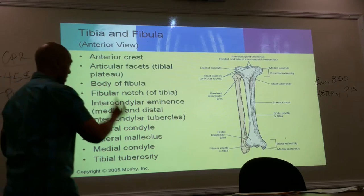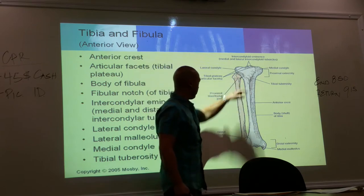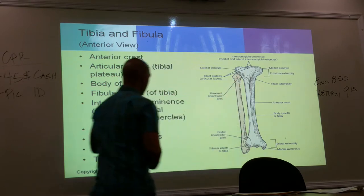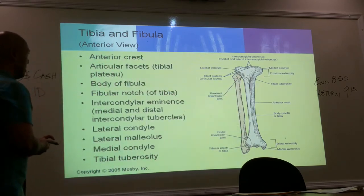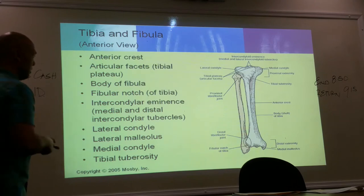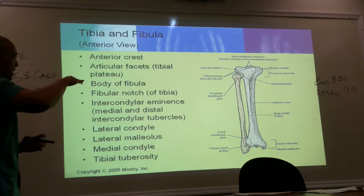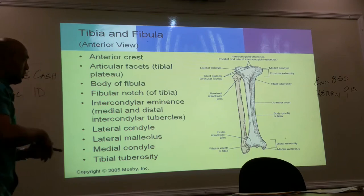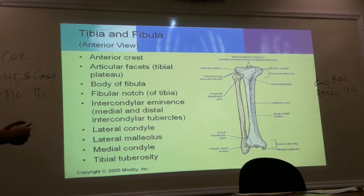Moving up, it also has a proximal tibiofibular joint. So you have both a proximal and a distal tibiofibular joint — grooves or notches in the tibia to accommodate the areas of the fibula.